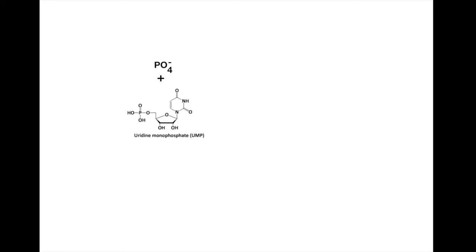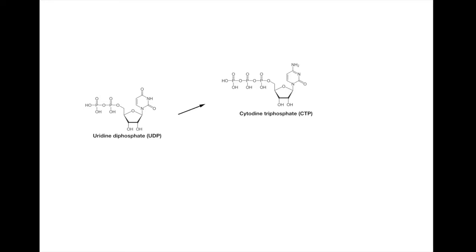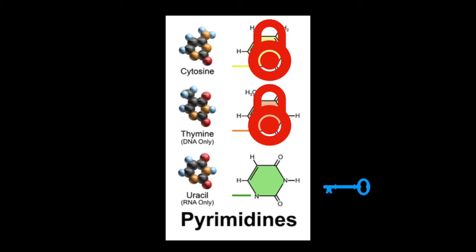A phosphate can be added to UMP to become UDP, or uridine diphosphate, and from here can go on to become either CTP, cytosine triphosphate, which synthesizes our second pyrimidine, cytosine.